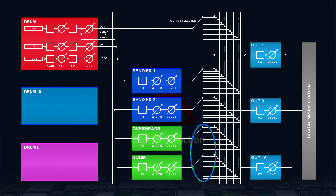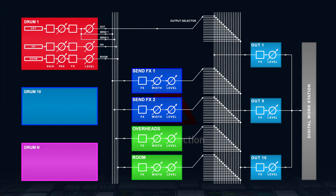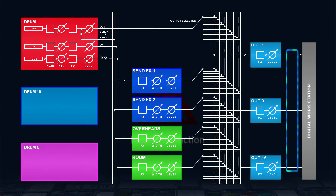Sends also have FX pipelines, and after that they're sent to any output channel as well. And finally, when everything is mixed in each output channel, there's yet another FX pipeline for each of them. In MDrummer 1 out, all outputs are then mixed together. In MDrummer 16 out, each output is sent to a dedicated bus in your DAW. Back to the mixer.